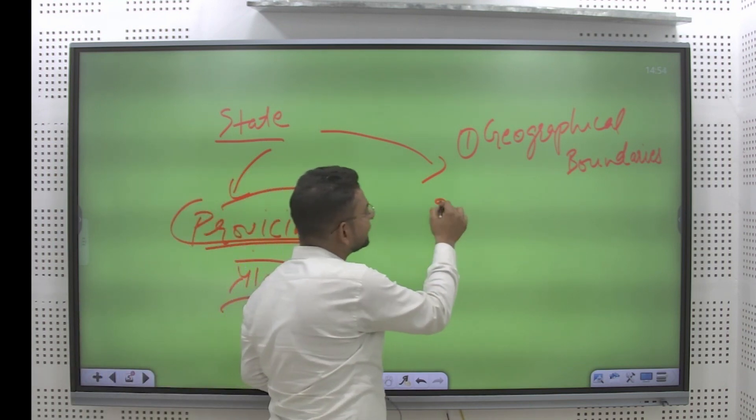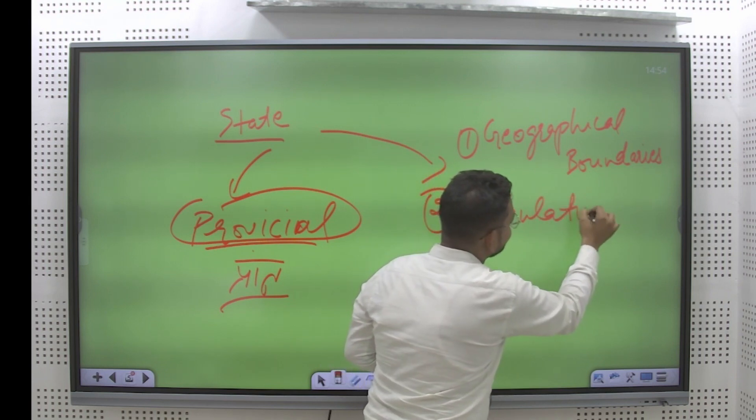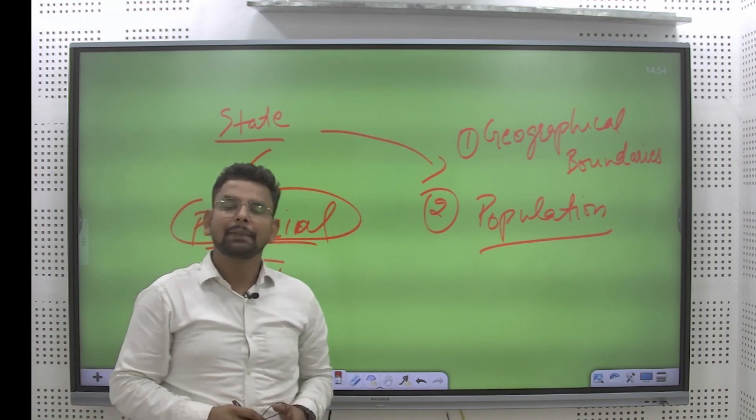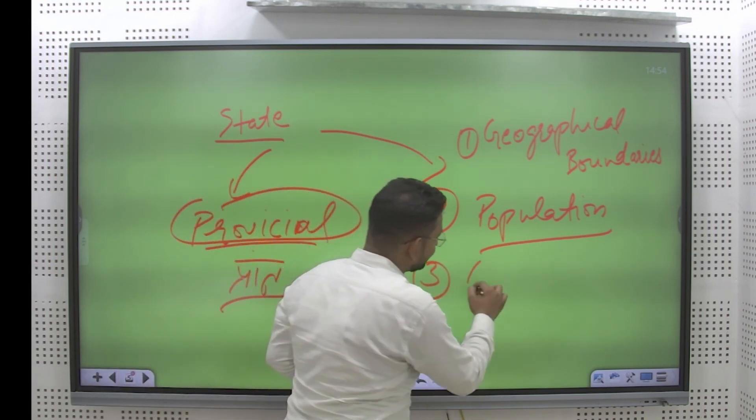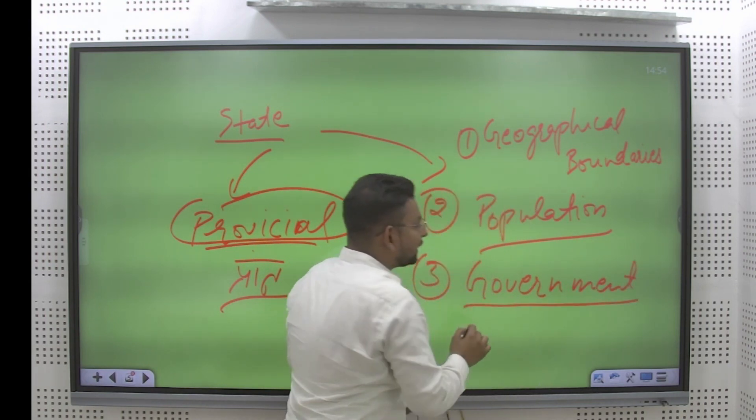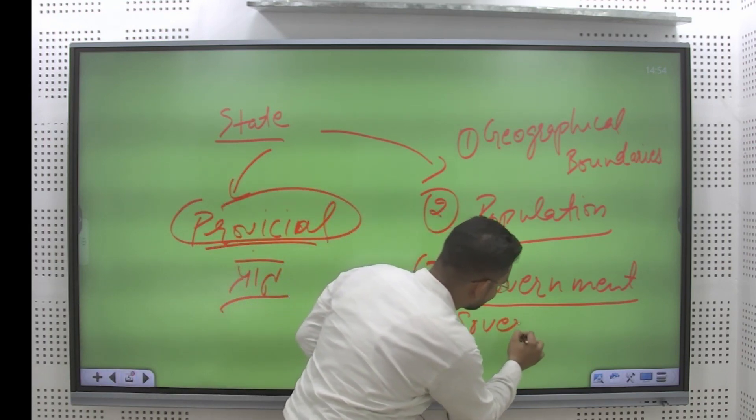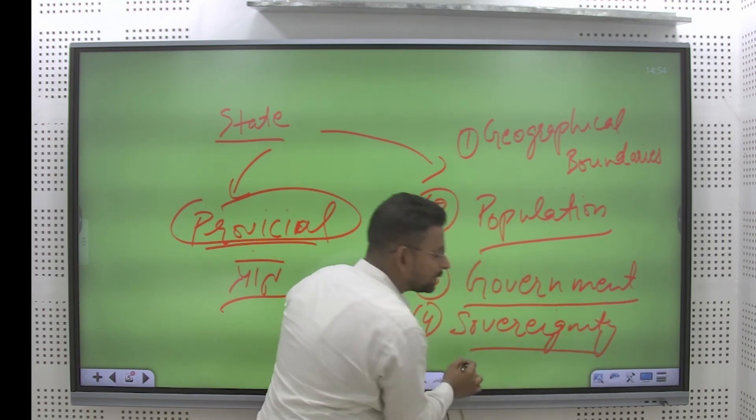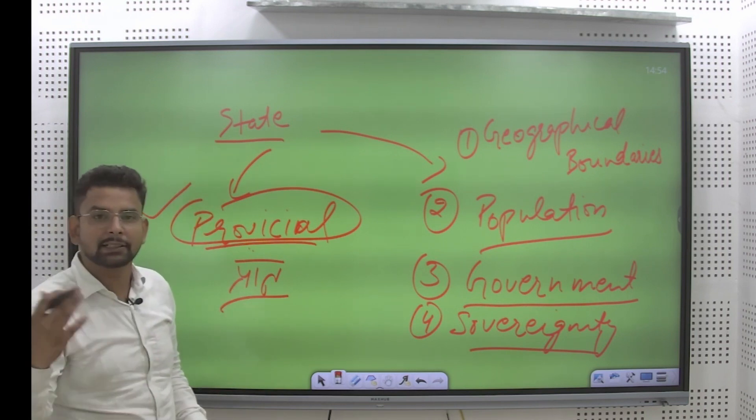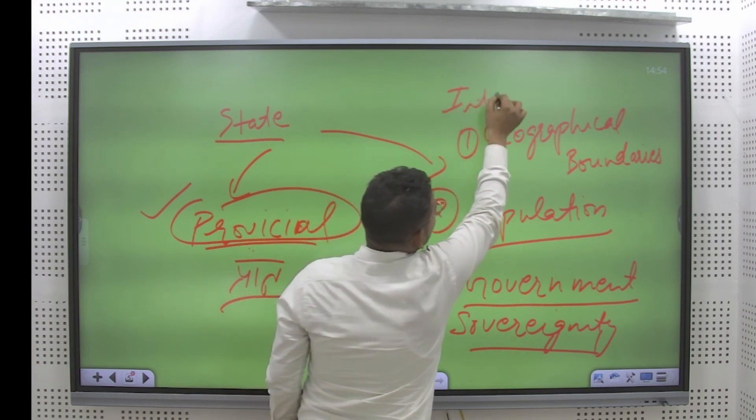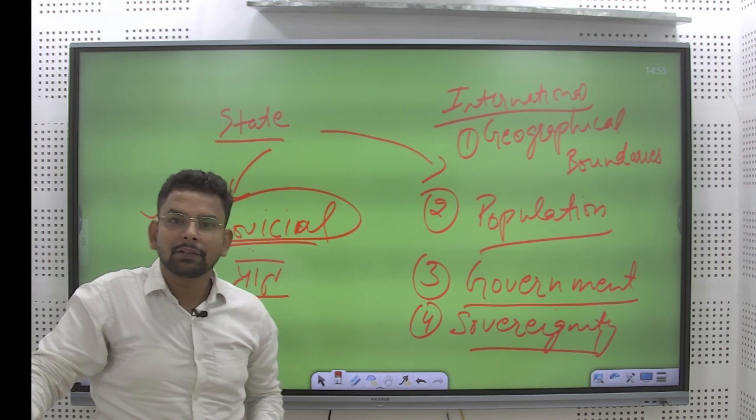According to international laws, state is an entity which fulfills four basic elements condition. The very first in the list is the geographical boundary. Ek limited bhoobhag hona chahiye. The second essential characteristic of a state as per the international law is it must have population. Bina jansankhya ke, state ka concept apne aap mein nirarthak hai. Population is the second essential component. The third part is government. Sarkar. Sarkar ka hona, state mein aavashyak hai. And the fourth essential part of it is sovereignty. If these four conditions are fulfilled, then we can name that geographical boundary as the state.